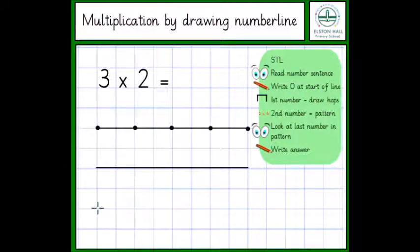When they've gotten used to this, we would give them a ruler for them to draw their own line in their books. When they have their number line ready, they can start solving their multiplication. Firstly, we read the number sentence. 3 times by 2 equals. The next step is we always start by doing our 0 at the start.